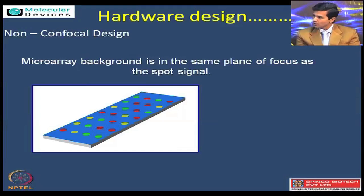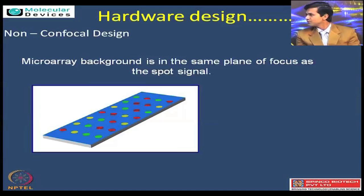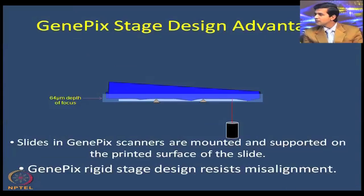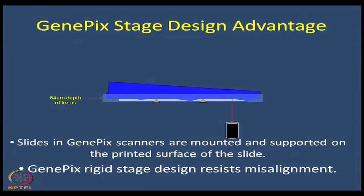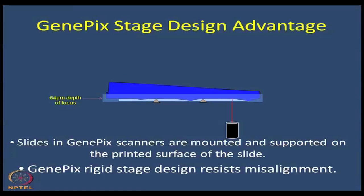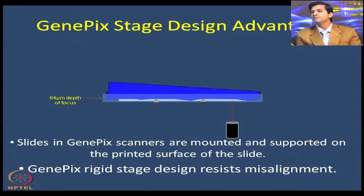That is why non-confocal chemistry is chosen, coupled with the inverted chemistry of scanning, which helps achieve the best results in the form of signal-to-noise ratio. Usually in glass slides there are a lot of small deformities which our eyes cannot see. What we do is invert the slide so that it goes to the level of the same scanning plane and is supported at the edges with controllers which account for the deformities in the glass.